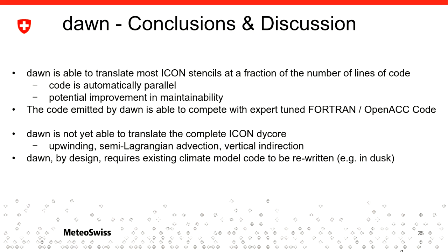One thing to note is that you can translate parts of the code at a time — it doesn't have to be the whole thing in one go. The strategy is to replace parts that are most computationally consuming, integrate those into the existing model, learn on the go, and then do the transition together with domain scientists who are already exposed to this kind of work. So whilst it is a revolution, it can be brought in gradually — you don't have to stop everything and restart.